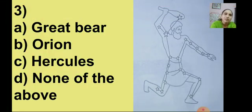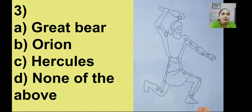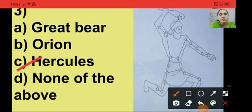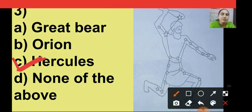In the next figure, question number 3, the options are great bear, Orion, Hercules and none of the above. This picture is of a constellation. The right answer is Hercules, that is option C.